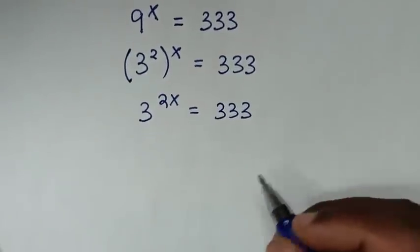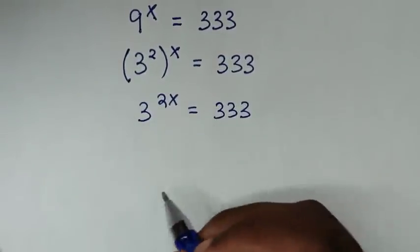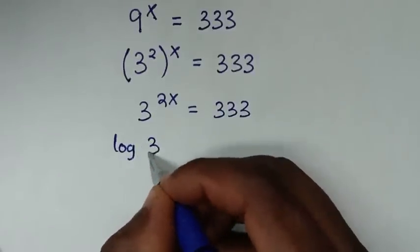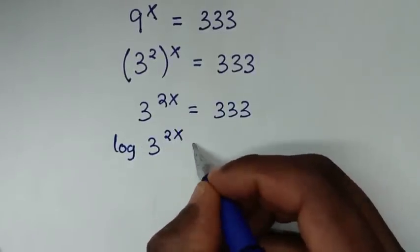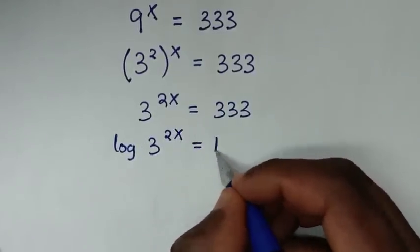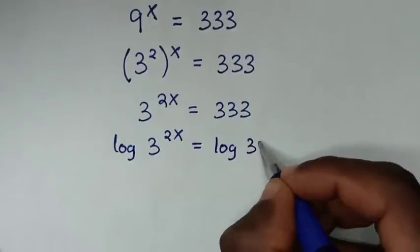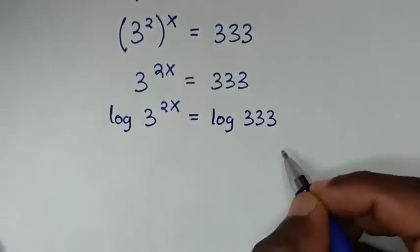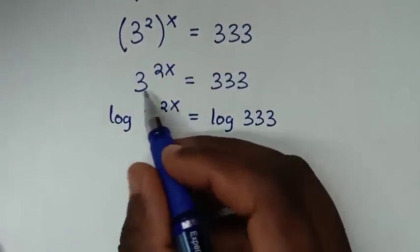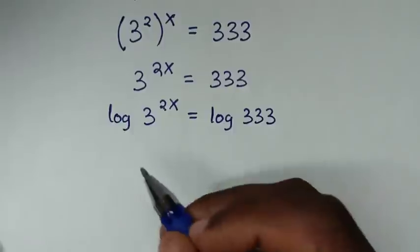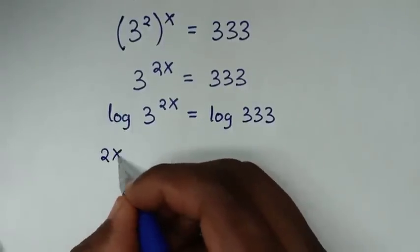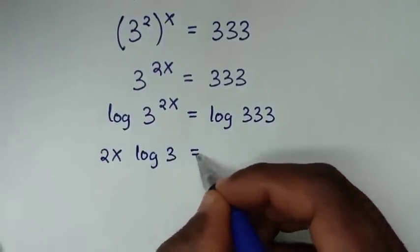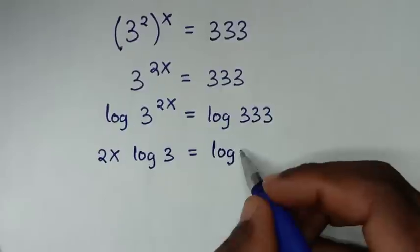Then we'll apply log on both sides, so it will be log of 3 power 2x equals log of 333. Then in the next step, the power of 2x will move to the front, so it will be 2x times log of 3 is equal to log of 333.